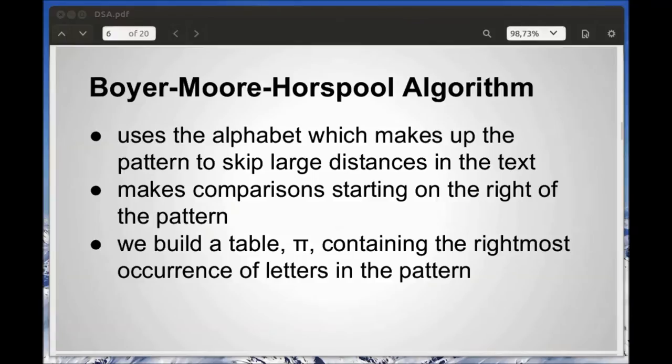The Boyer-Moore-Horsepool algorithm uses the alphabet that makes up the pattern to skip large distances. The comparisons are performed starting from the right, hence finding the rightmost match. The table we build tells us the rightmost occurrence of each letter in the pattern.